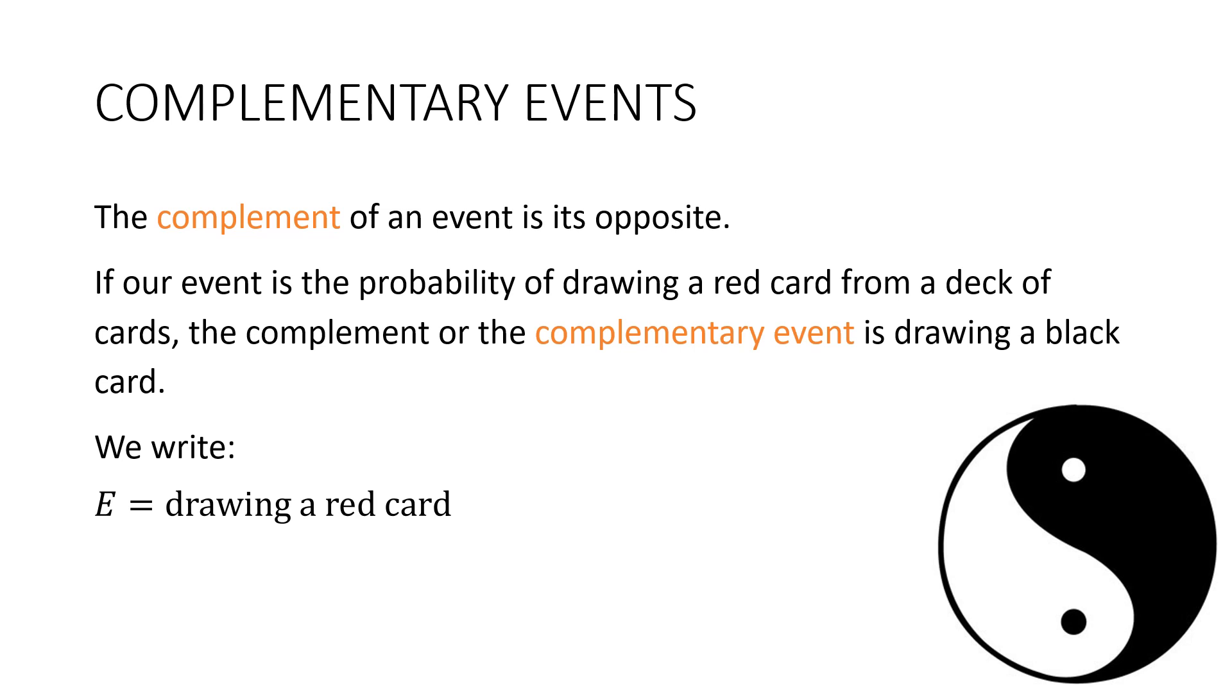And this is what we would write. Here's our event E that's equal to drawing a red card. And what we write for the complement is E with a line over the top. And this means not E. And it's either drawing a black card or you can simply put the word not in front of the event. Not drawing a red card.